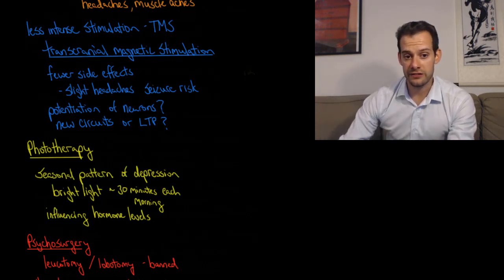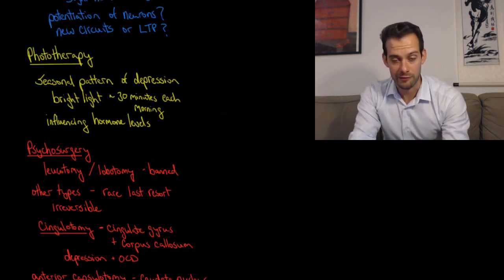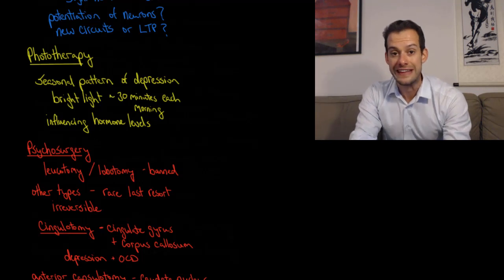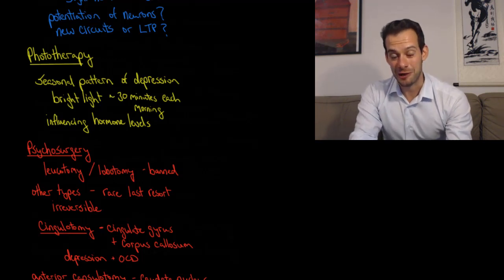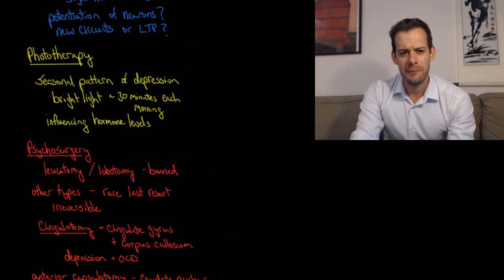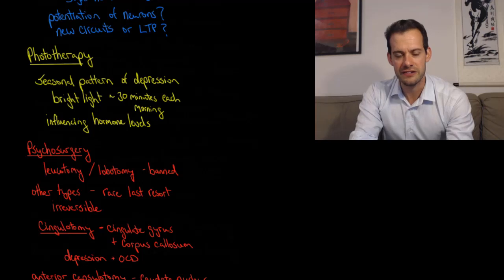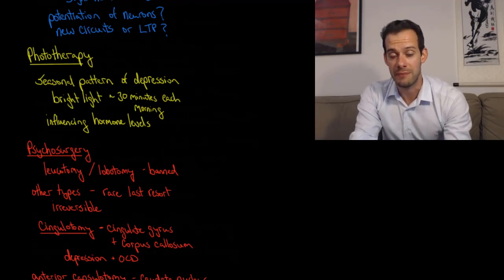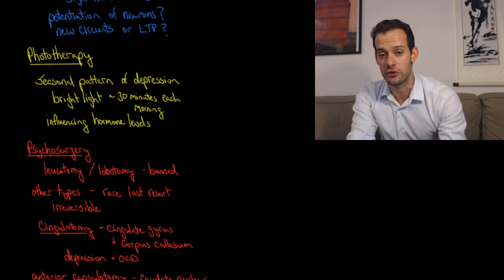The next biomedical approach is one that at first glance sounds like a bit of quackery. If I told you about the healing powers of light for some mental illness, you might think I was exaggerating certain aspects—it might sound kind of new-agey or something. But in phototherapy, we actually do use the healing power of light to treat depression. This is used for the seasonal pattern of major depressive disorder.